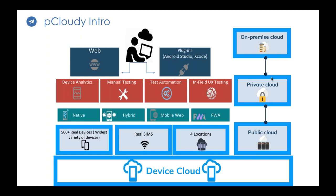We have another business model called the private cloud. A private cloud is a smaller and more exclusive instance of the public cloud. It is hosted by us and the devices are ours, but it is exclusively for the use of your company. You have very high device availability because only people from your company will be using those devices, and you can have near-unlimited use of those devices. The biggest advantage is exclusivity and unhindered access to the devices.